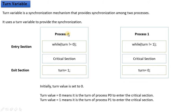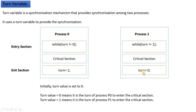When Process 0 comes out of the critical section and sets the turn value to 1, at that time Process 1, which has been waiting in the while loop, gets the memory value 1. The while loop breaks and Process 1 will execute and get access to the critical section.